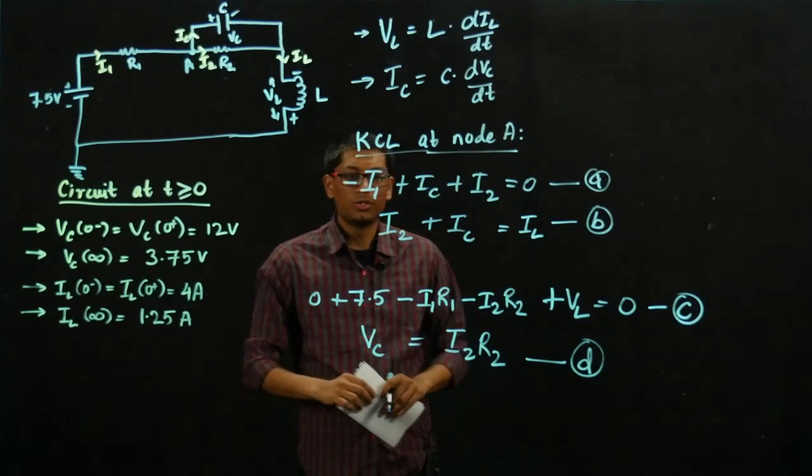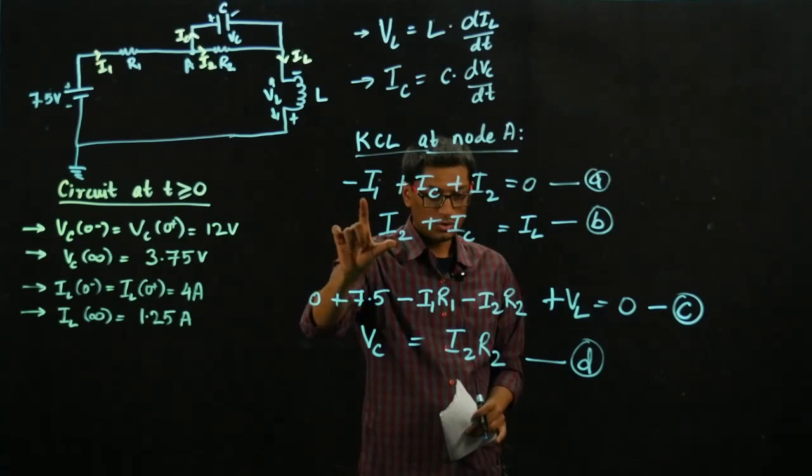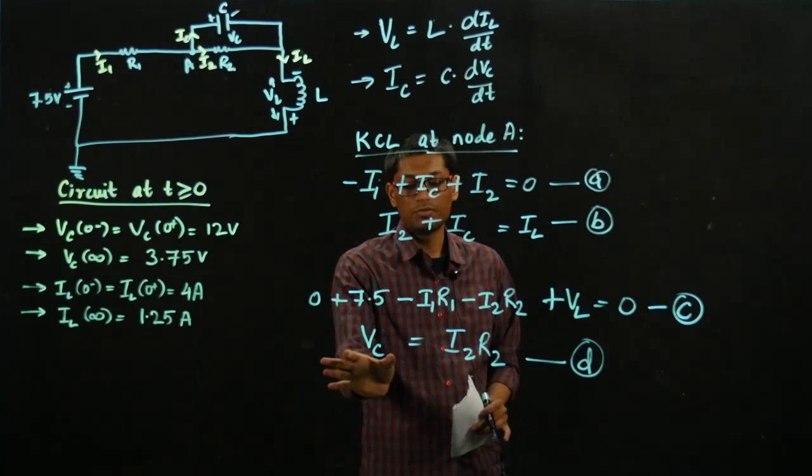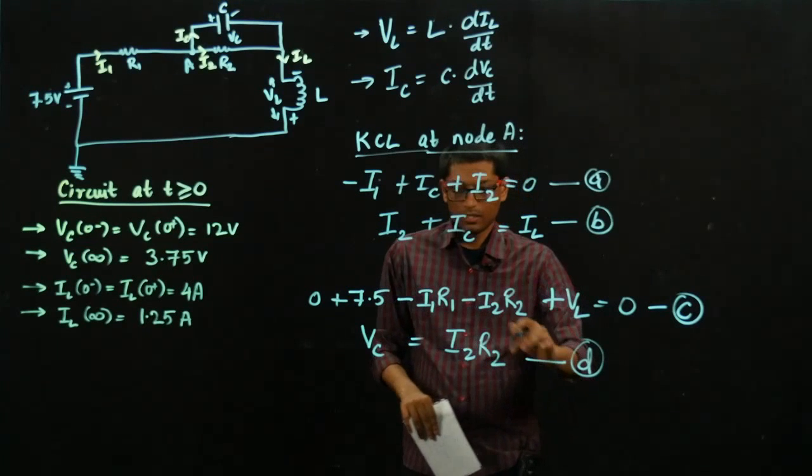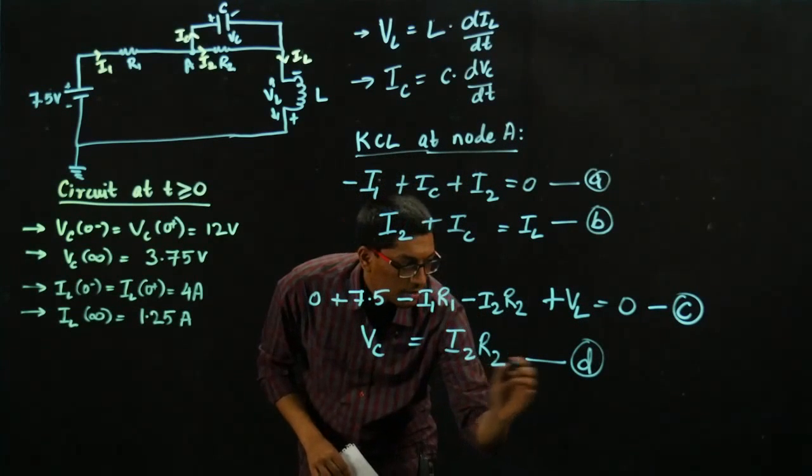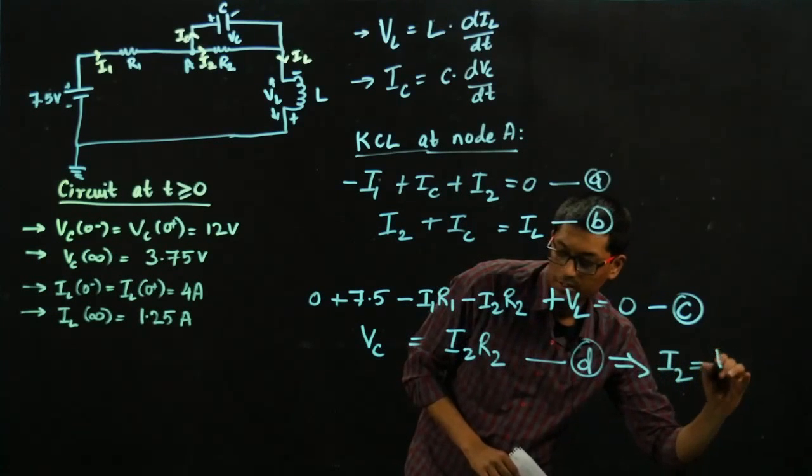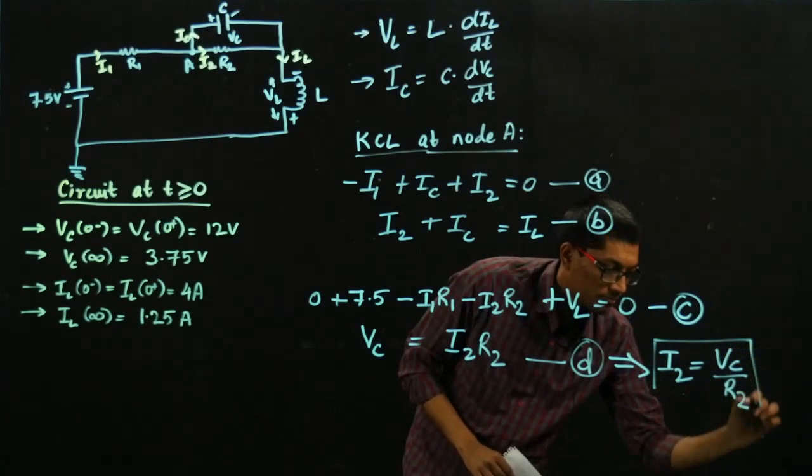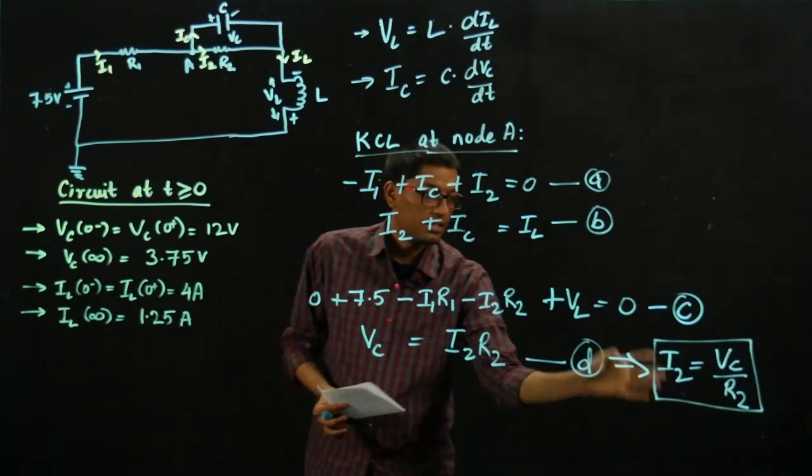Now what I need to do is I need to eliminate these variables I1 and I2, so I can have a differential equation only in terms of the voltage variables. How can I do that? Equation D gives me the value of I2 directly, which is VC over R2. Now plug this back into equation C.